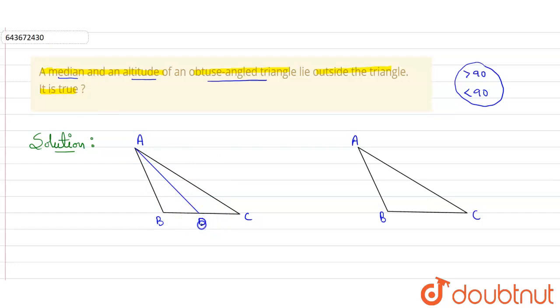So D will be the midpoint of BC. Similarly, if I draw a median from C to B, it will come here. Let's mark it as E. E will be the midpoint of AB. And similarly again, if I draw a median from B, it will come here. Mark it as F.